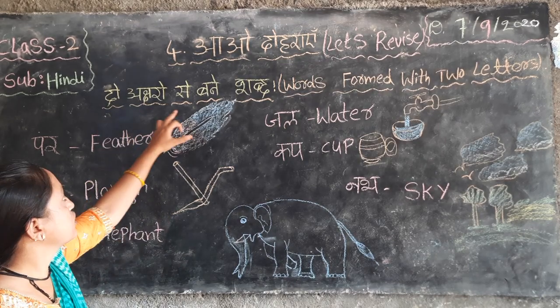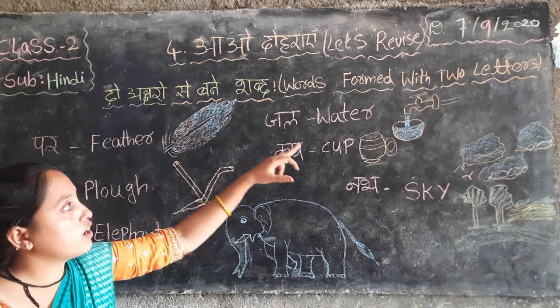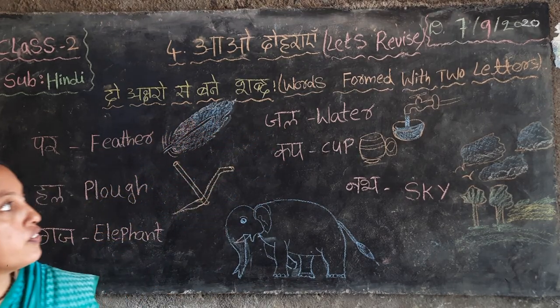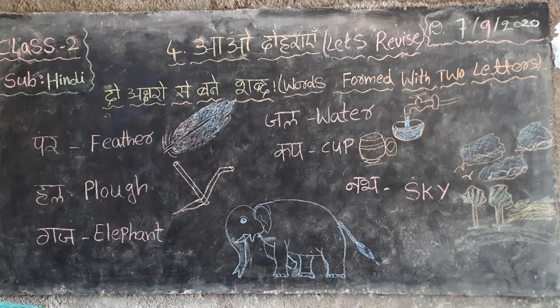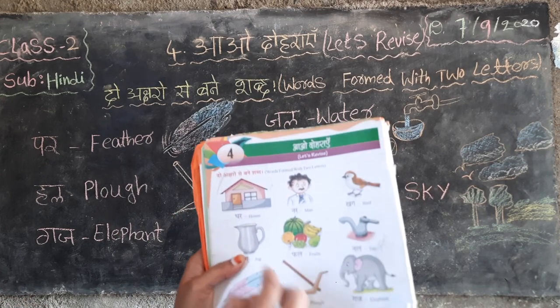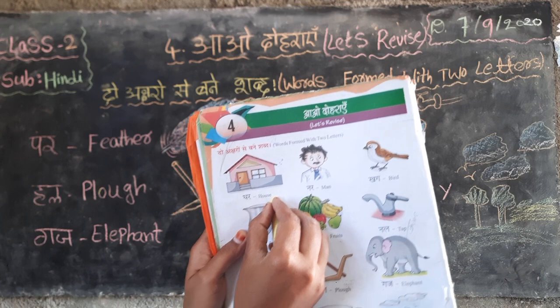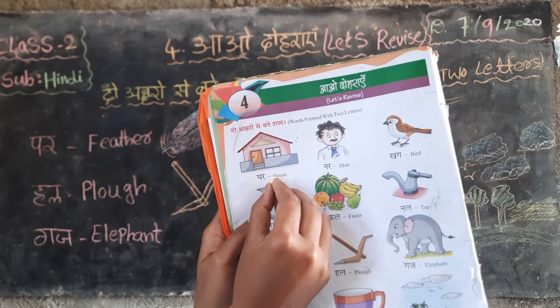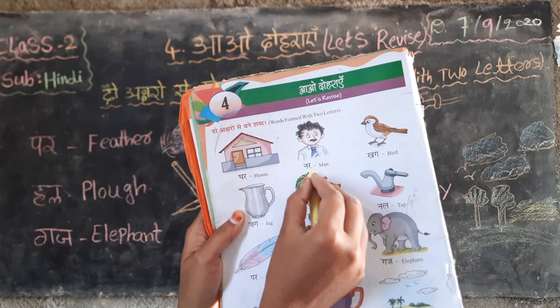2 aksharon say bani shabd — words formed with 2 letters and their meanings. Yesterday we learned these meanings. Ghar — house, H-O-U-S-E, house.